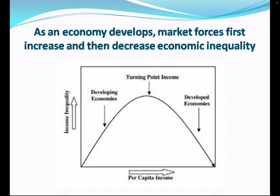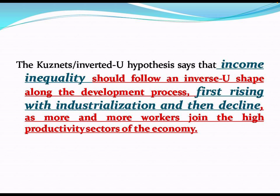The Kuznets inverted U shape shows that income inequality follows an inverted U shape along the development process. In the first stage, inequality rises with industrialization, and then it decreases as many workers join higher-productivity sectors of the economy.